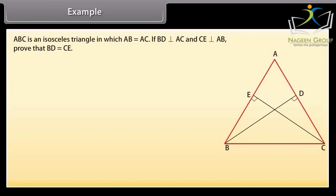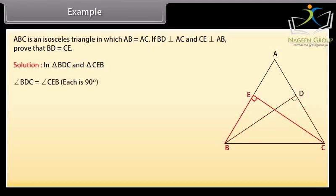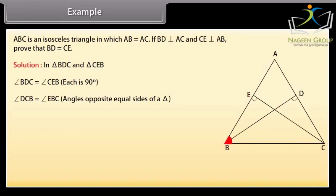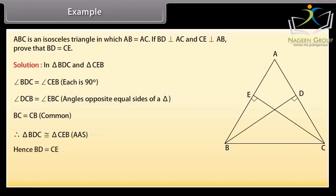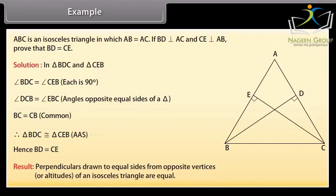ABC is an isosceles triangle in which AB is equal to AC. If BD is perpendicular on AC and CE is perpendicular on AB, prove that BD is equal to CE. Solution: in triangle BDC and triangle CEB, angle BDC is equal to angle CEB because each angle is 90 degrees. Angle DCB is equal to angle EBC because angles opposite equal sides of a triangle are equal. And BC is equal to CB because they are common. Therefore, triangle BDC is congruent to triangle CEB by AAS. Hence, BD is equal to CE. This gives us a result: perpendiculars drawn to equal sides from opposite vertices, or altitudes of an isosceles triangle, are equal.